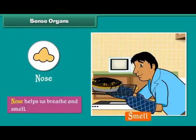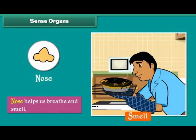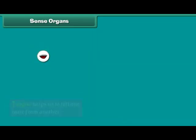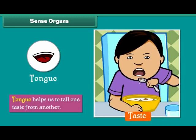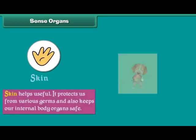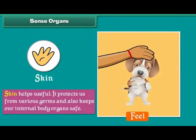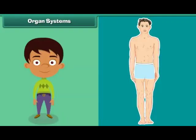The nose helps us to breathe and smell. The tongue helps us to tell one taste from another. The skin protects us from various germs and also keeps our internal body organs safe. The internal organs of the human body are grouped together to form different organ systems.